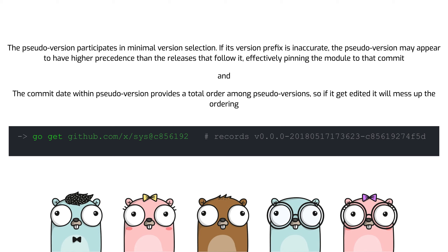There are problems with not letting the go command automatically generate the pseudo version. First, the pseudo version participates in minimal version selection. If its version prefix is inaccurate, the pseudo version may appear to have higher precedence than the releases that follow it, effectively pinning the module to that specific commit. And the commit date within the pseudo version provides a total order among pseudo versions, so if it gets edited, it will mess up the ordering. Despite this recommendation, sometimes the pseudo version may exist in a go module that has been edited by hand. In other instances, the full pseudo version string may be generated by a third party tool.